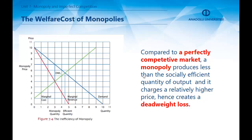Regarding the welfare cost of monopolies, compared to a perfectly competitive market, a monopoly produces less than the socially efficient quantity of output and charges a relatively higher price, thus creating a deadweight loss. As you can see in the diagram, there is a triangular area that represents the deadweight loss.